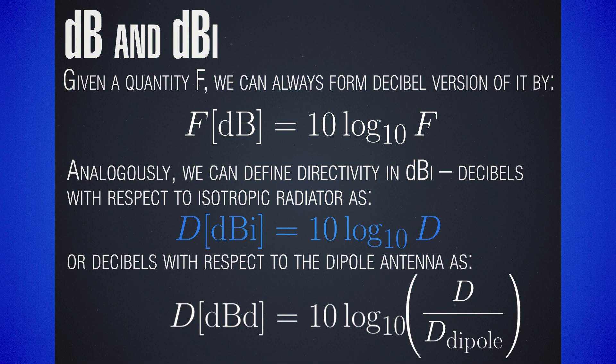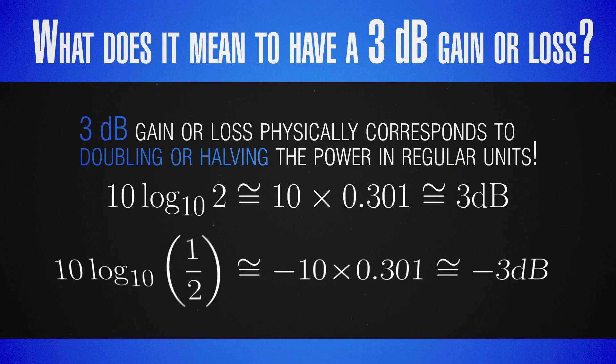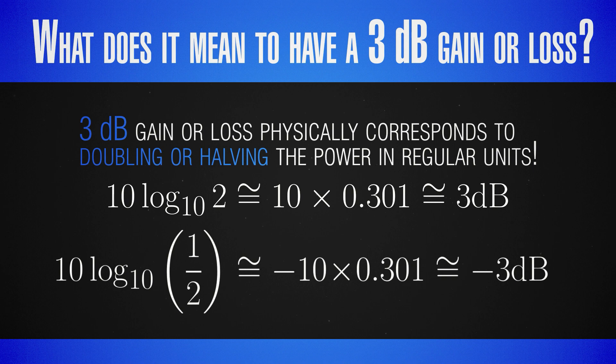A very useful number to keep in mind is 3 dB. Since 10 times logarithm base 10 of 2 is approximately 3, this means that any doubling of the directivity as a ratio corresponds to a 3 dB gain of the directivity in decibels. Equivalently, any reduction by a factor of 2 will change the sign of the logarithm and correspond to a loss of 3 dB. So any factor of 2 doubling or halving of the directivity corresponds to plus or minus 3 dB.